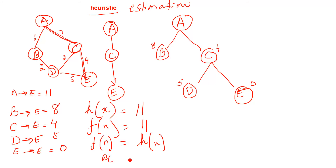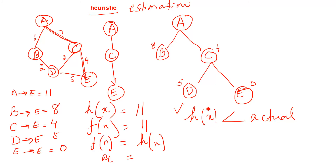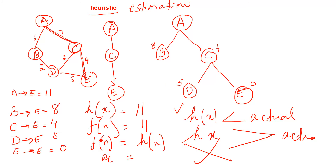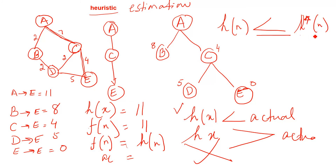F(N), the actual cost, can equal the heuristic cost when we have the optimal solution. It is also acceptable if the heuristic cost is less than the actual cost — that means we used some additional nodes. However, the heuristic cost can never be greater than the actual cost; if it is, the solution is not optimal. So the admissible condition is: heuristic cost ≤ actual cost, written as H(N) ≤ H*(N).